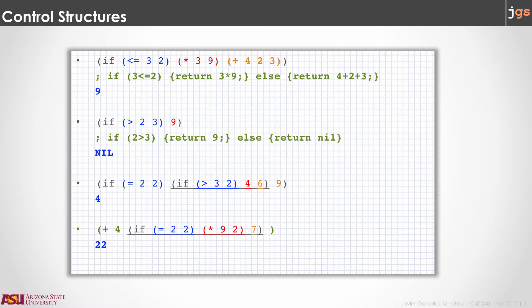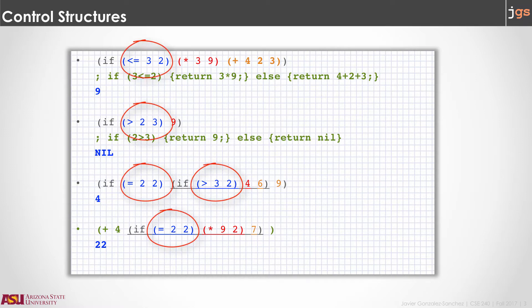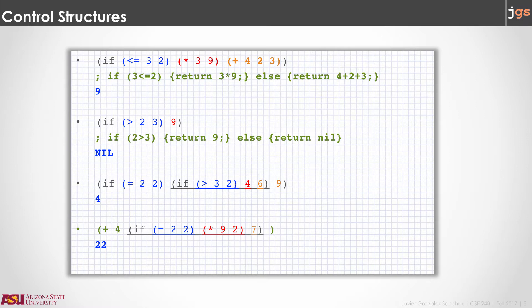Control structures will follow the same format that we reviewed before. They are not functions, but we are going to use a keyword as a function id. For instance, for the conditional statement we are going to use the if keyword. In Lisp, a conditional statement starts with the keyword if and you have three parameters. The first parameter is a condition — that condition is a list — and the second and third parameters can be a list or an atomic element.